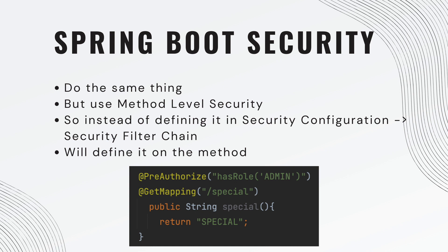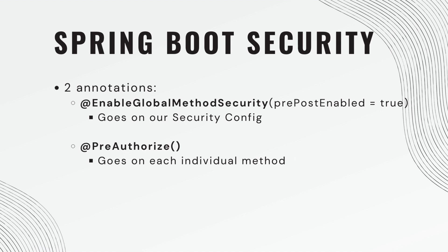We're going to use an annotation called @PreAuthorize and specify our role there. There are two annotations we need to get this up and running. The first is @EnableGlobalMethodSecurity, and we need to pass in the parameter pre-post-enabled equals true. We just slap this on our security configuration. The other annotation is @PreAuthorize, which goes on each individual method.